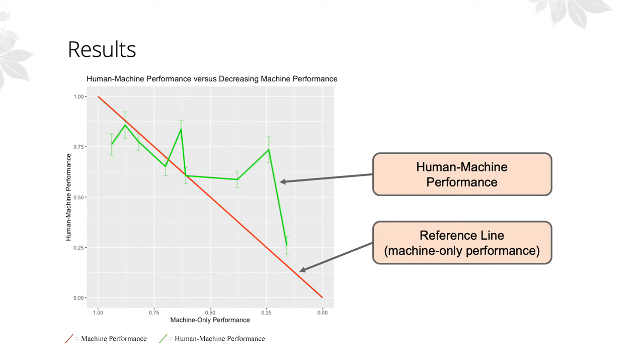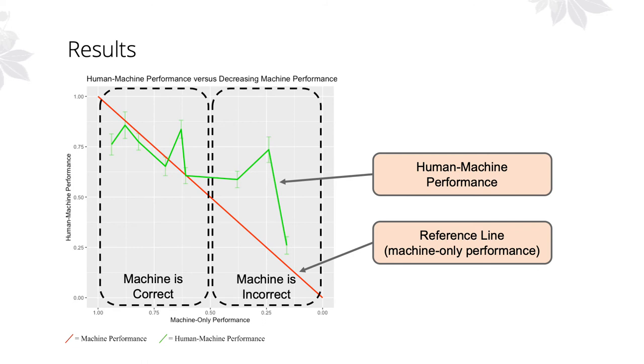The green line shows the average performance of the human-machine team for each case. Even from these data, we can see human-machine performance seems to roughly follow the performance of the machine alone when the machine prediction is correct. But, as the machine prediction begins to become incorrect, it appears that human-machine performance diverges from the machine prediction and extends past those machine boundaries.